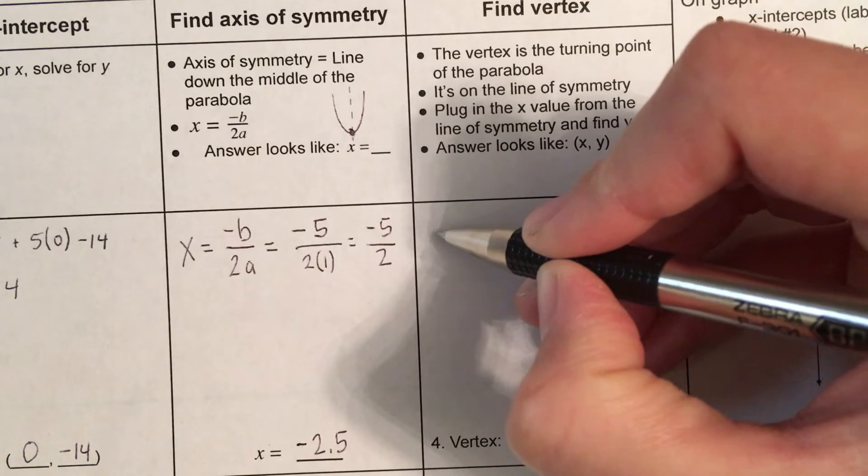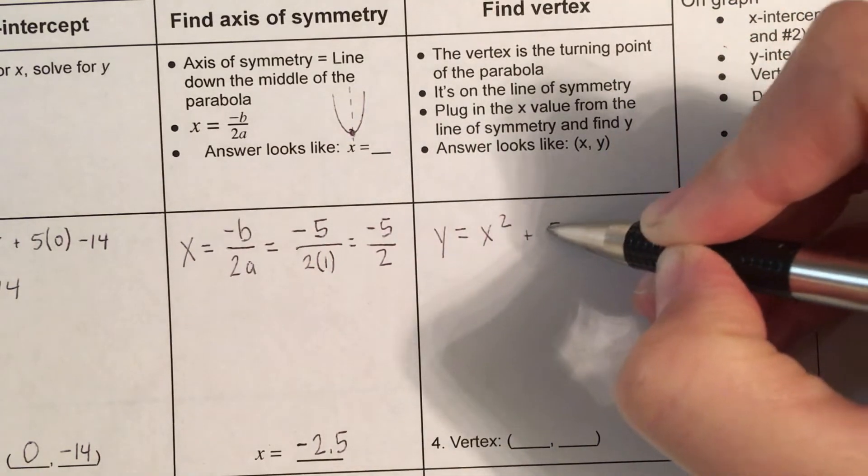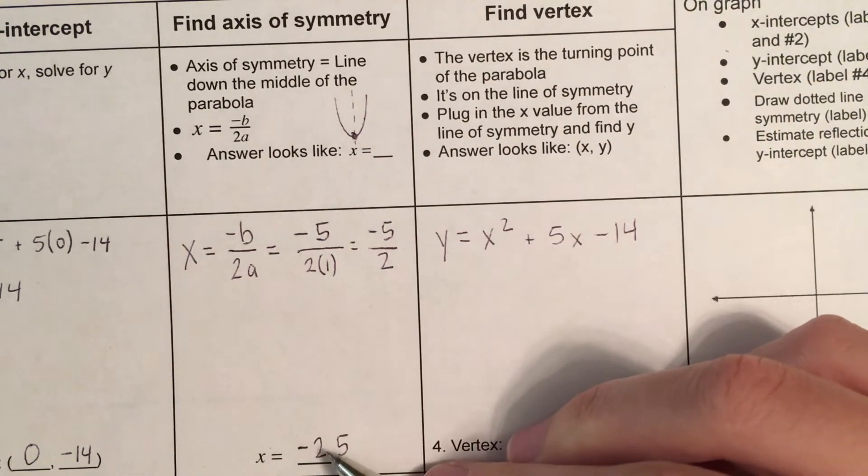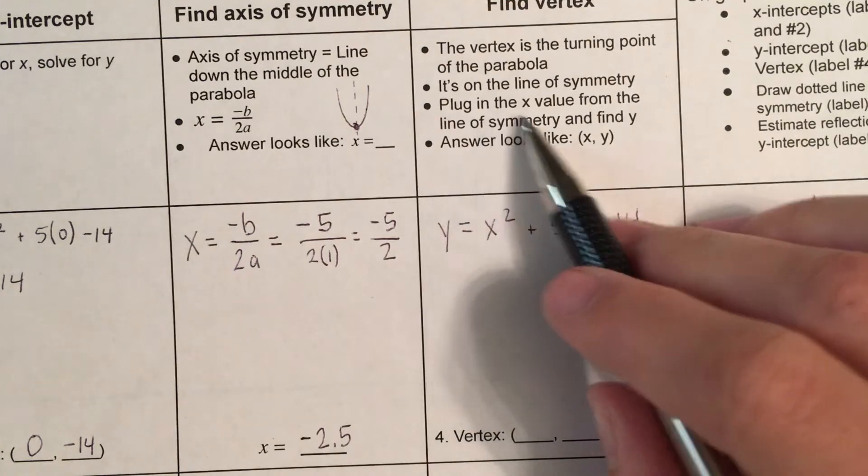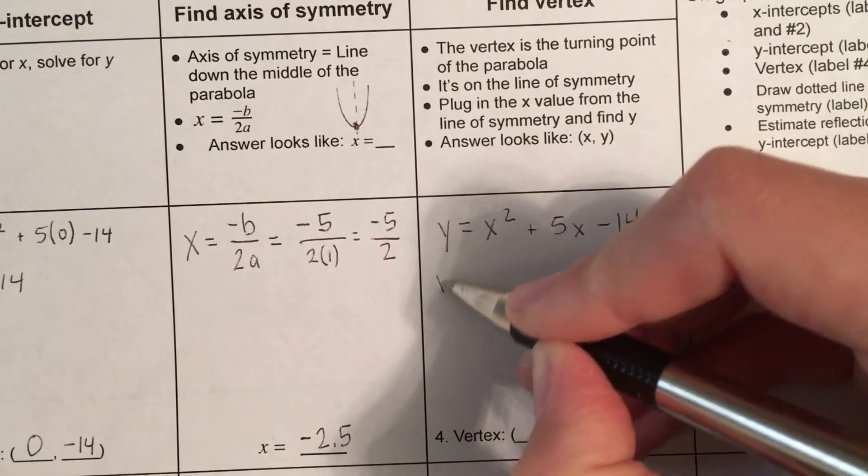And I've purposely picked an example where I have a negative decimal. It's like really annoying to plug in. But we're just going to use a calculator and it's not a big deal. A lot of times this is a whole number. A positive makes it a little easier. But watch what I'm going to do. I'm going to take my function. And just for the sake of making this easy to understand, I'm going to just recopy it. Now, I'm going to plug in my x value. I'm plugging in the x value from the line of symmetry and then find y. So, I'm going to plug in this x value for x.